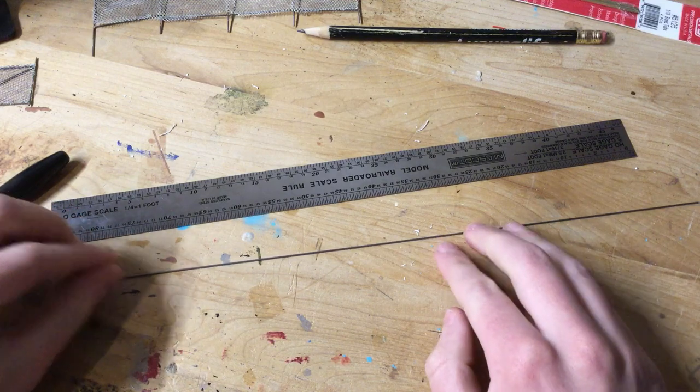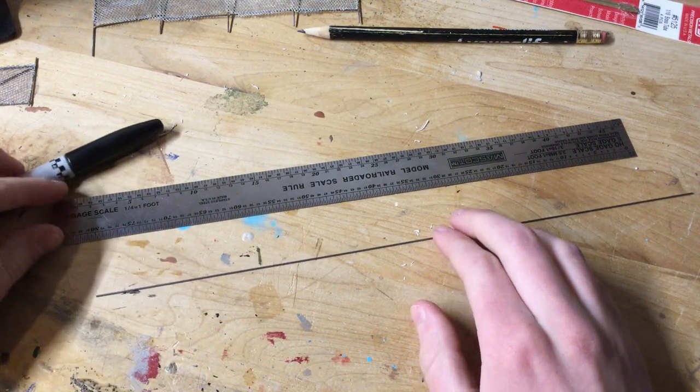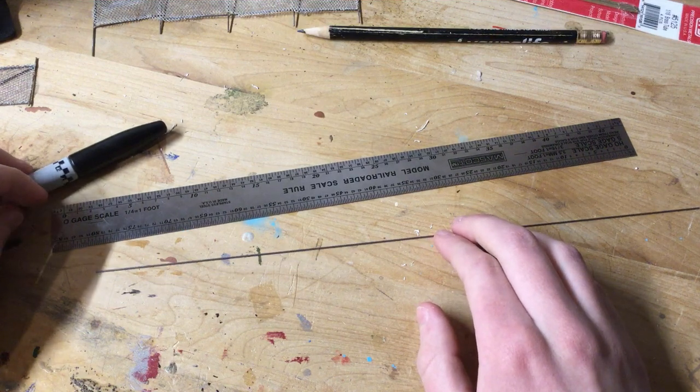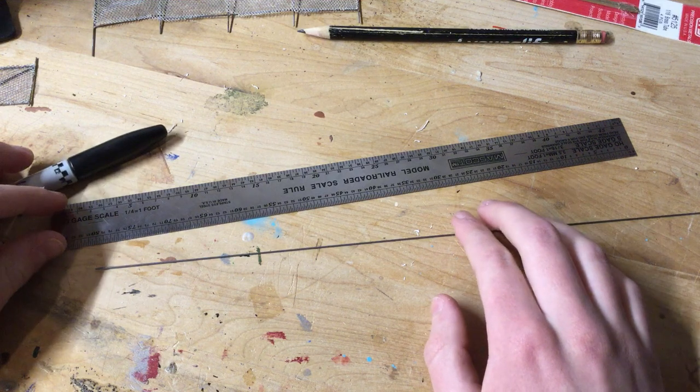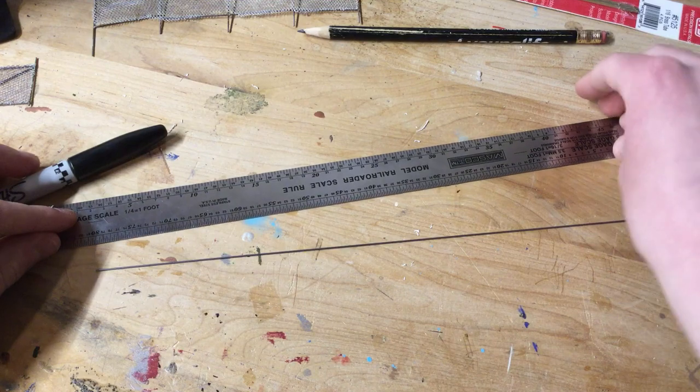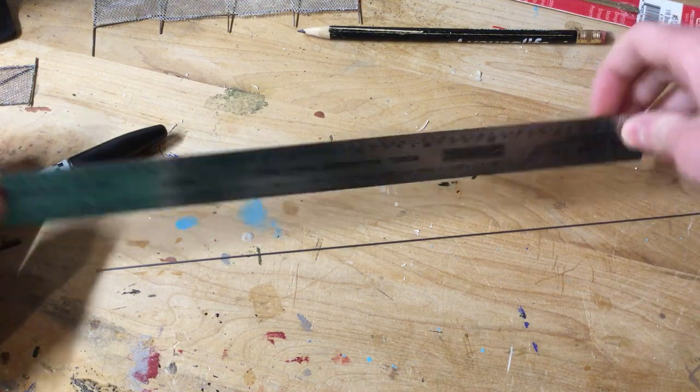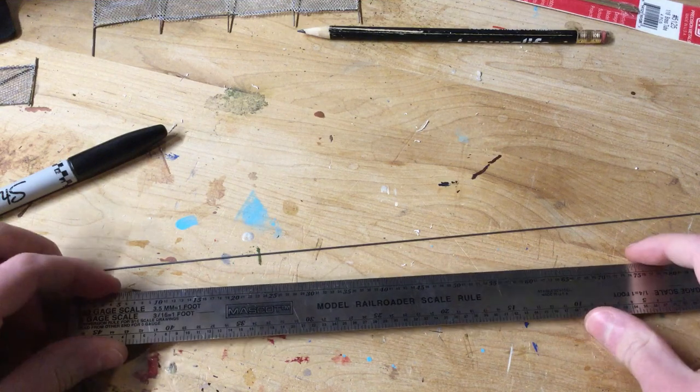The first step, once you gather your materials, is to mark and cut the sections for the fence. So I am going to make mine lengthwise about 12 feet and heightwise about 6 feet. If you want to make one taller, that could represent a more industrial fence, and a shorter one, more residential.